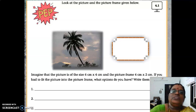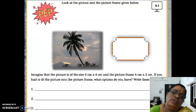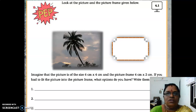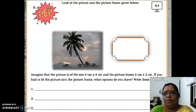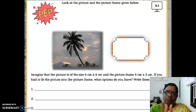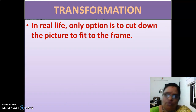You want to write your options. The picture is big and the frame is small — what will you be doing? Any answers? So you will be cutting the picture and making it fit inside that frame. You will be cutting the four sides or whatever is not needed. In real life, you will be cutting or folding the picture to make it fit into the photo frame. So in real life, the only option is to cut down or fold the picture to fit the frame.